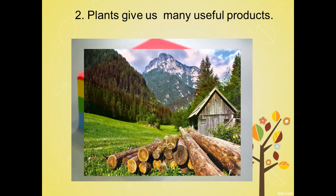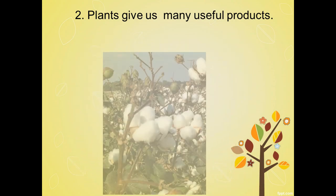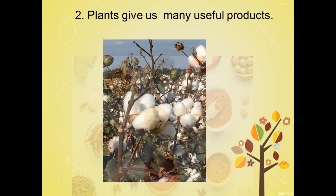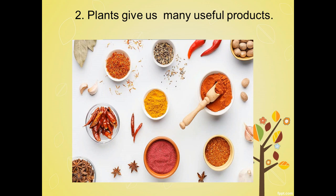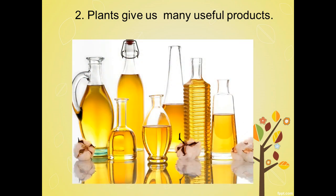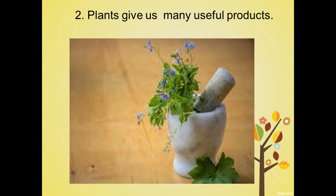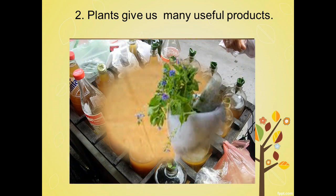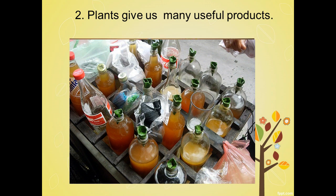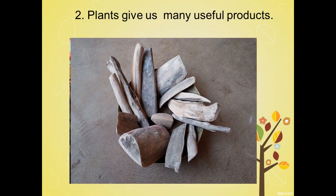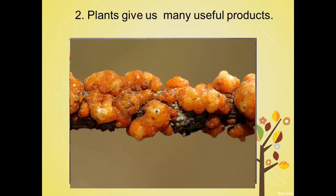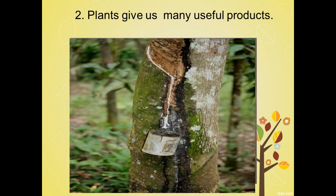Plants also give us many useful products like wood, paper, cotton, different types of spices commonly used in Indian kitchens, oils used for cooking, different types of herbal medicines called Ayurvedic medicines — very useful for different types of diseases — and also sandalwood, lac, and rubber.